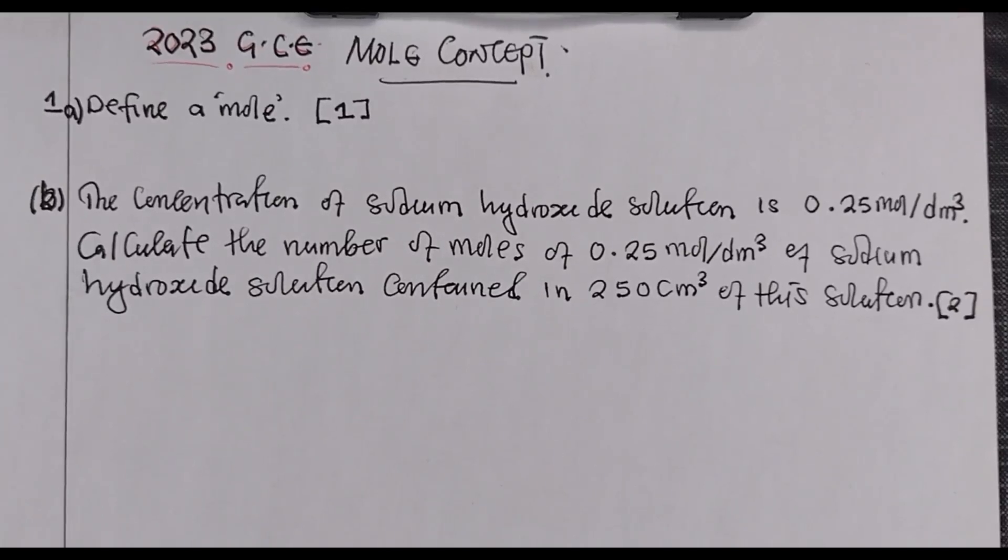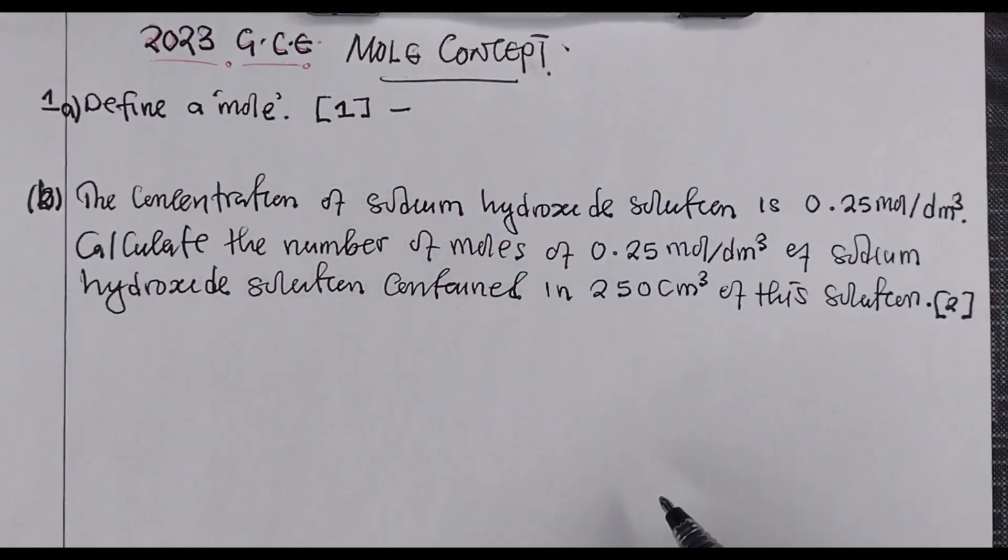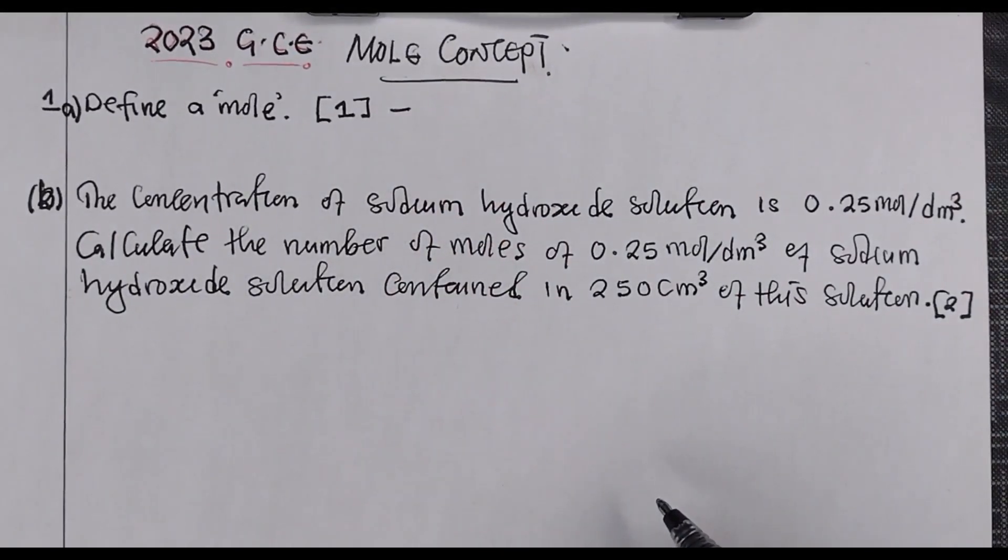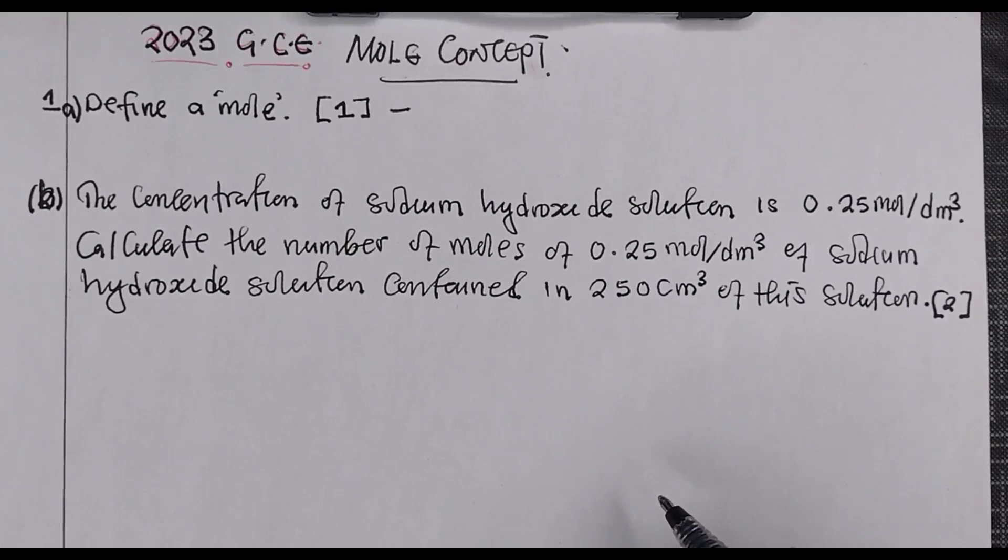The first question is define mole. So in defining mole, a mole is defined as the amount of substance that contains as many elementary particles as there are atoms in exactly 12 grams of carbon-12 isotope. That is how you define a mole precisely.